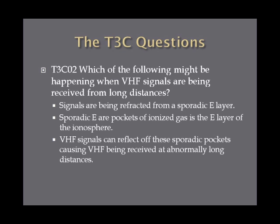Which of the following might be happening when VHF signals are being received from long distances? The answer is signals are being refracted from a sporadic E layer. The sporadic E are pockets of ionized gas in the E layer of the ionosphere. What happens is that the VHF signals hit these and are bent or reflected back towards the Earth, which causes an increased reception distance. Just remember sporadic E.